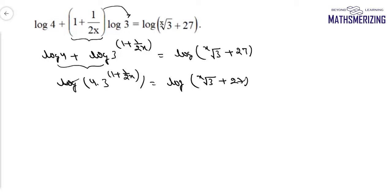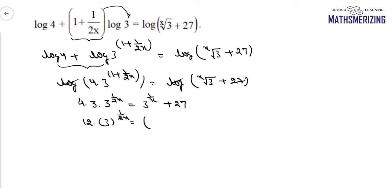Now I can cancel log with log. So I can write it as 4 into 3 to the power 1 upon 2x equals 3 to the power 1 upon x plus 27. So the left side is 12 times 3 to the power 1 upon 2x.